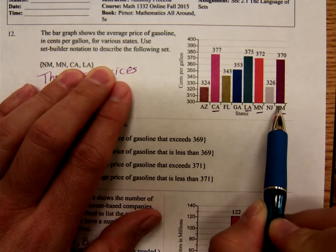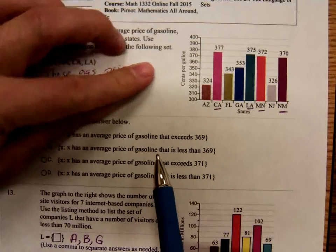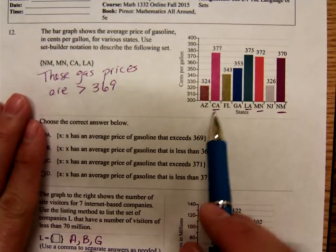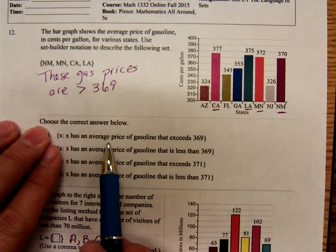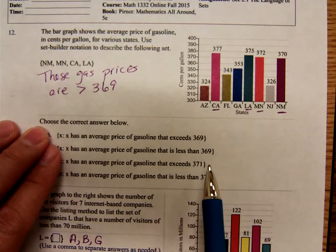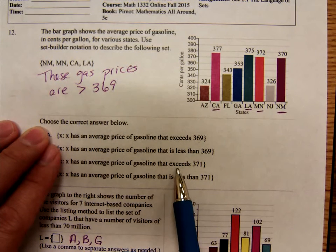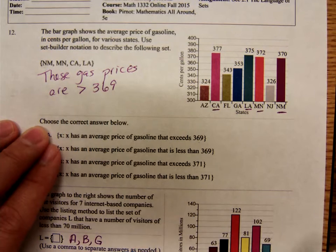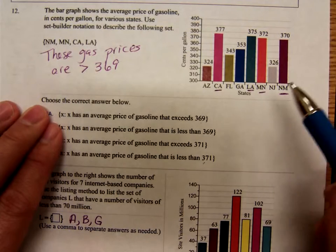Those all have high gas prices. If we read through the, notice, okay, the set builder notation. The set of all X such that X has an average price that exceeds $3.69, less than $3.69, exceeds $3.71, or is less than $3.71.